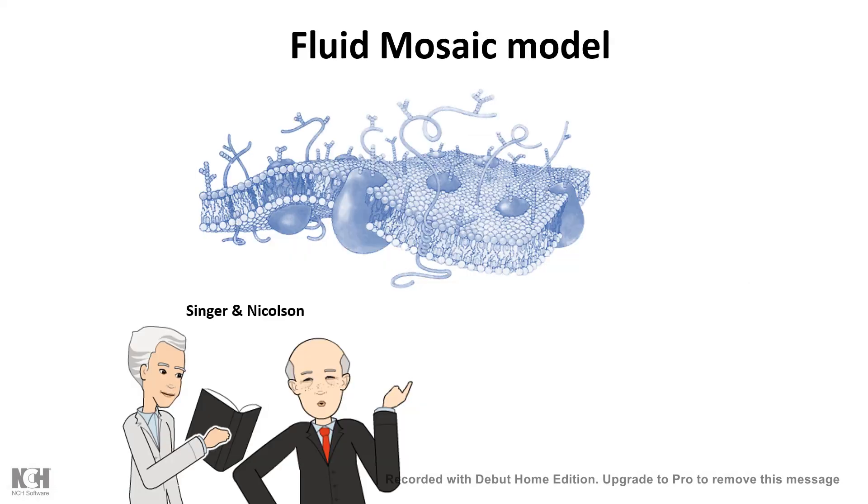Now according to fluid mosaic model, the plasma membrane is a sea of lipids on which there are some islands floating which are basically the membrane proteins.